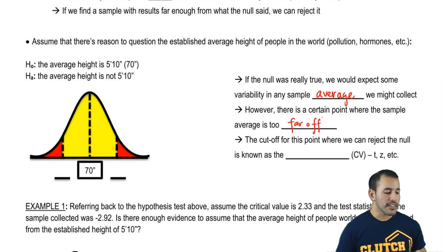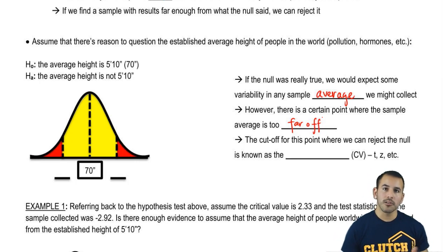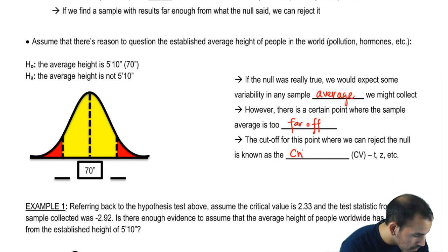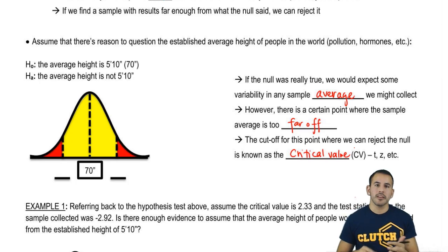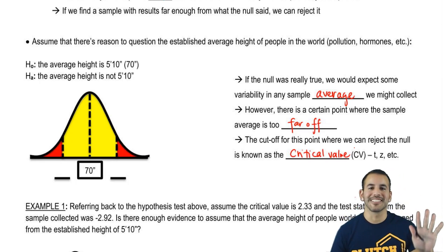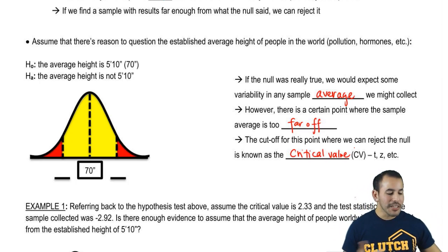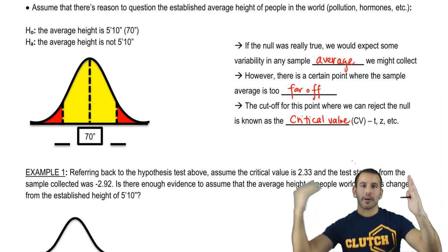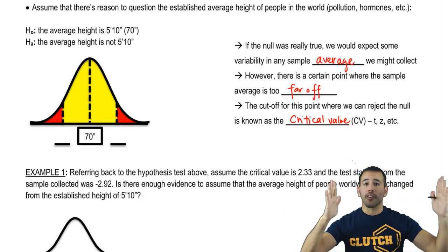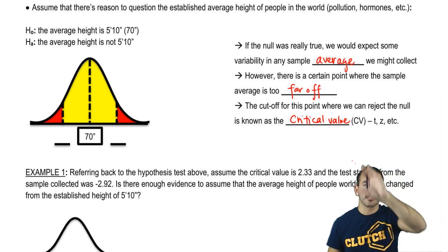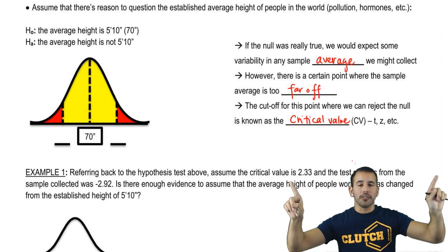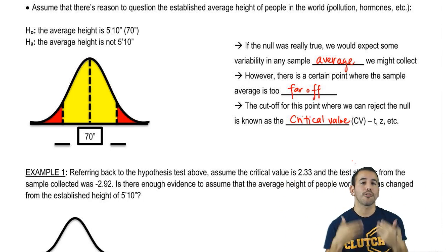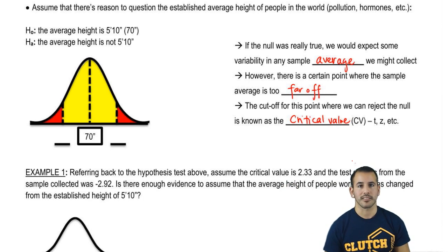We set this cutoff point based on a probability. We find a critical value — which tends to be a T statistic or Z score — and we're going to see other versions of this later. Critical values are set so that if a result is past this point on either side, it means the sample was really far off from the null. If samples are really far off, the null is probably not true, and we have evidence to reject the null hypothesis.